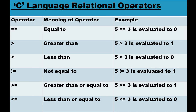There are some relational operators with their meanings and examples. First is the equal to sign (==). It checks the condition: is 5 equal to 3? If equal, it is true; else false. But here 5 is not equal to 3, so it will show the answer zero.